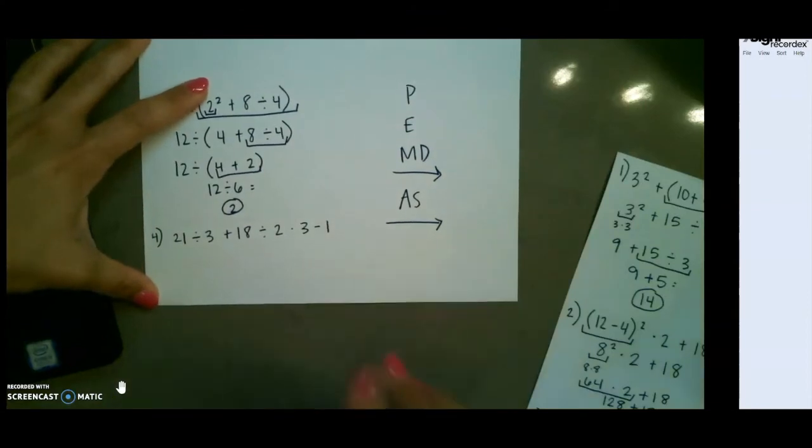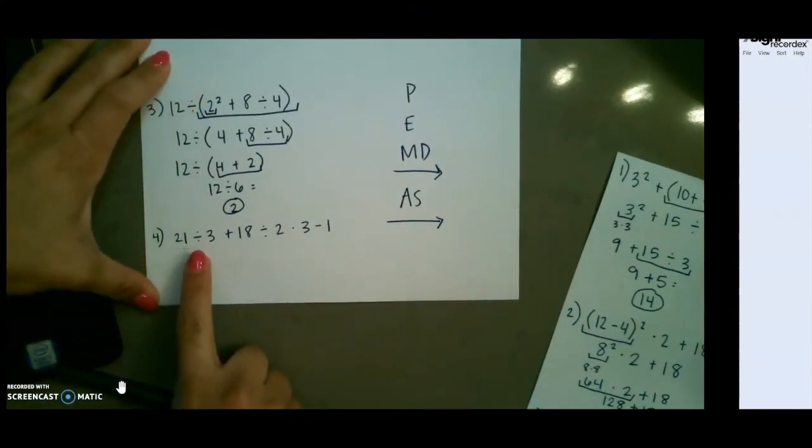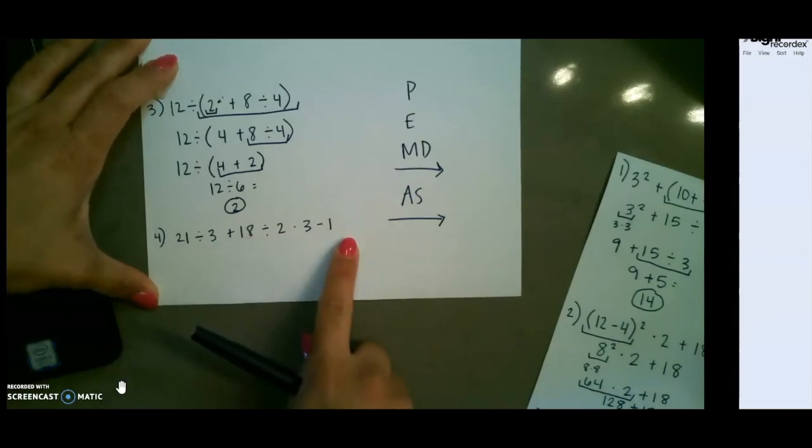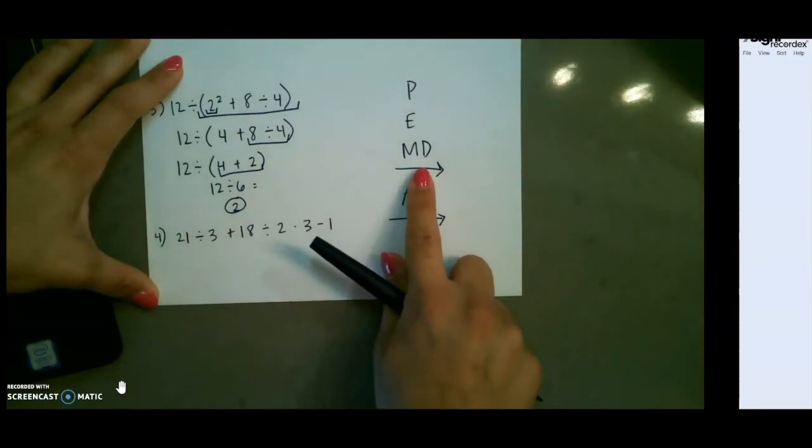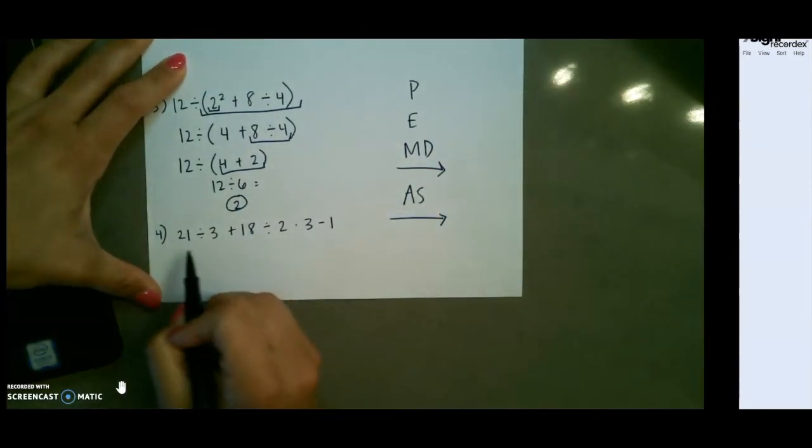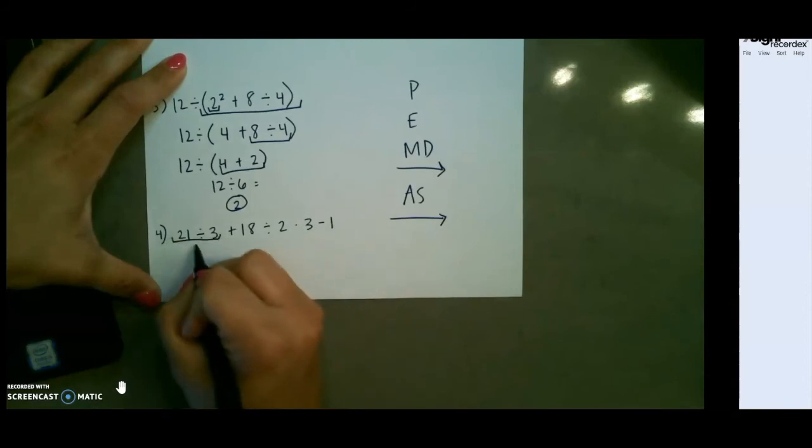For our last example, I show what it looks like when we have both multiplication and division, as well as addition and subtraction. We skip parentheses and exponents and go straight for multiplication and division. Since we're going left to right, I start with 21 divided by 3, which gives me 7.